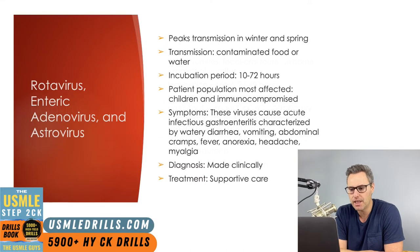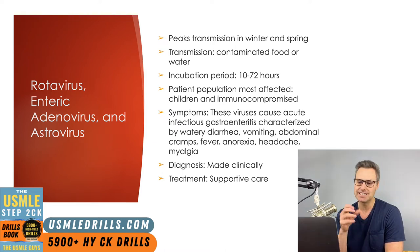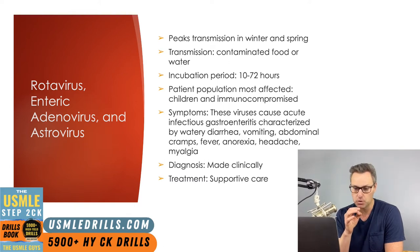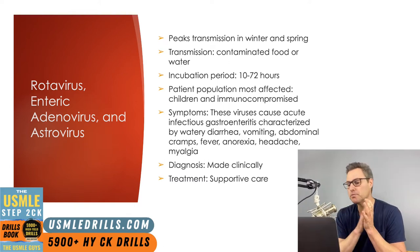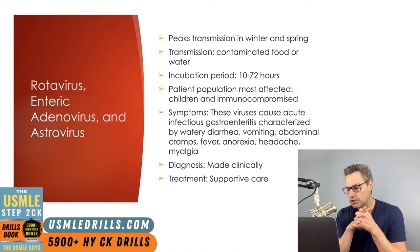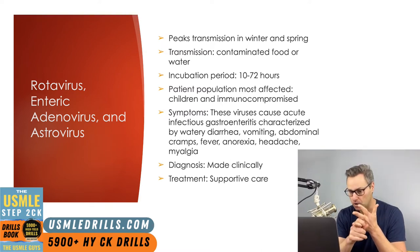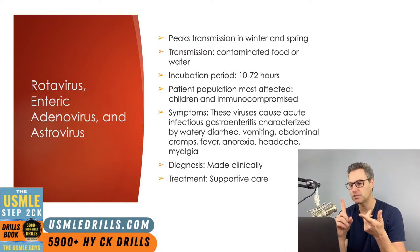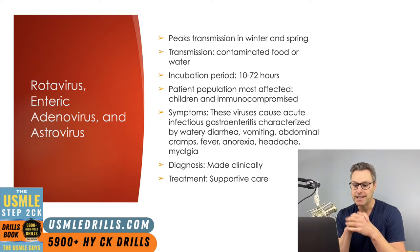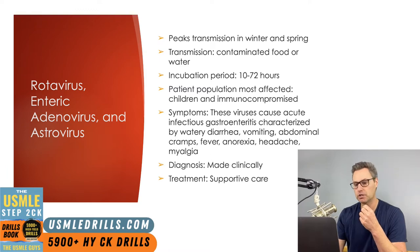Next up, we have rotavirus, the enteric adenovirus, and astrovirus. Peak transmission for these viruses is in the winter and spring months, and they are transmitted via contaminated food as well as water. The incubation period is anywhere from 10 to 72 hours. The patient populations you'll see this most frequently in are children and those who are immunocompromised. Symptoms include watery diarrhea, vomiting, abdominal cramps, fever, anorexia, headache, and myalgias. These viruses are also diagnosed based on clinical symptoms, and treatment is supportive.